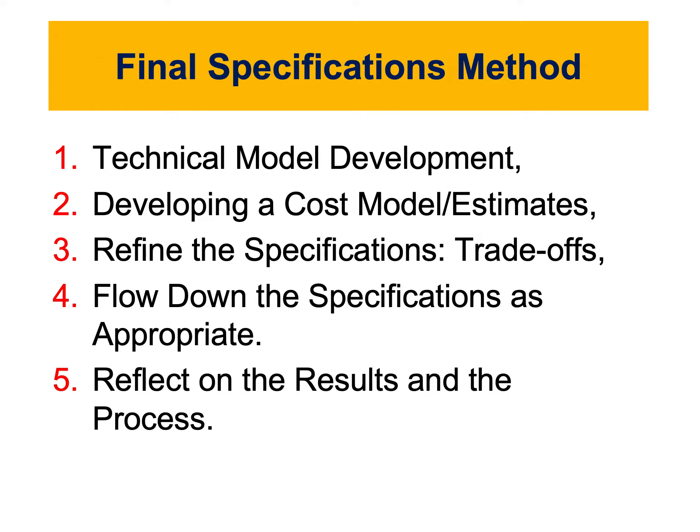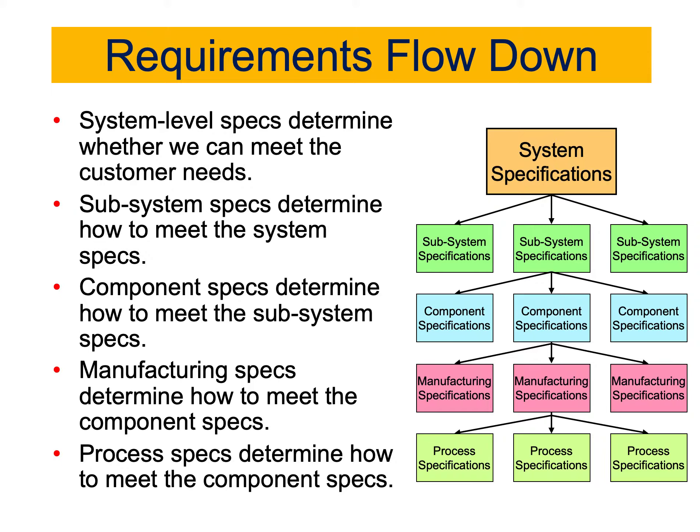This fourth step is called 'flow down the specifications as appropriate.' At this stage, we need to consider how to handle big projects or prototypes that have a lot of complex components. If your prototype is simple with three or four components or subsystems, you should be fine. But if you are designing something with a lot of components, there is a need to do something called flow down and create specifications using this flow down procedure.